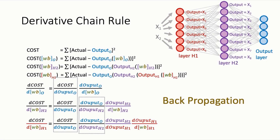This application of the chain rule is the essence of the backpropagation algorithm, which is the algorithm that neural networks use to learn, and how neural networks implement gradient descent learning.